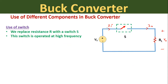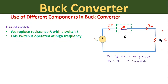In this case, we will replace the resistance R with a switch S operated at very high frequency. When the switch is in the ON condition, it acts as a short circuit, so the output voltage equals the input source voltage Vs — if source voltage is 80 volts, output voltage is also 80 volts. When the switch is in the OFF condition, the source is disconnected from the load and the output voltage equals zero.